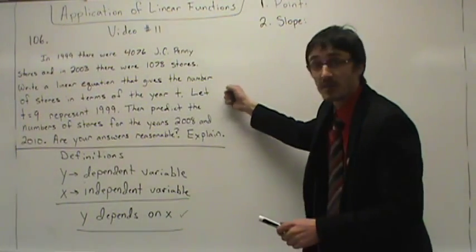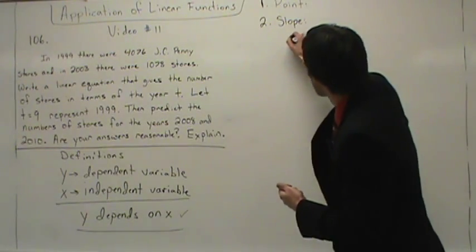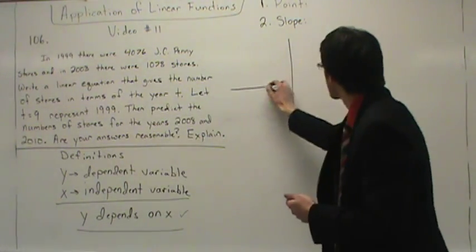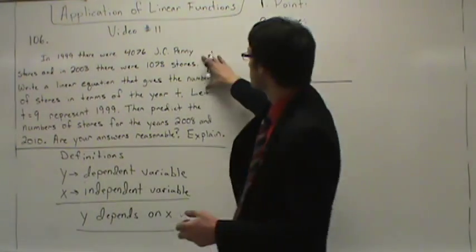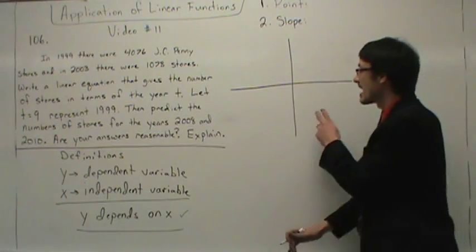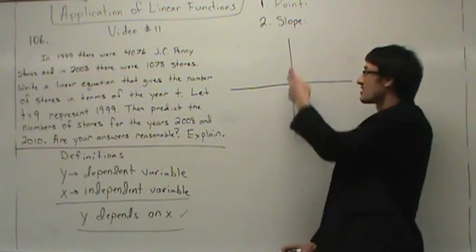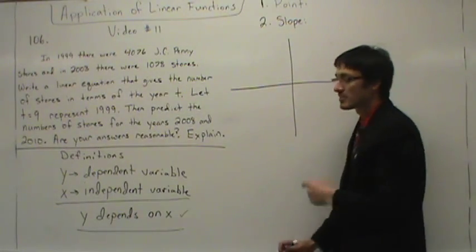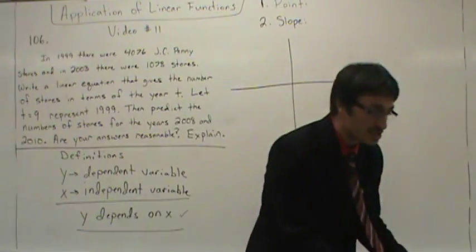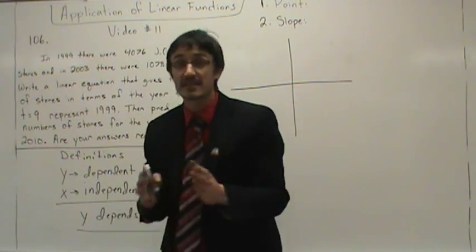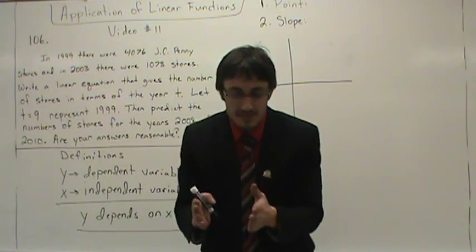To do this problem, number 106, what do you need? You need a graph. So let's draw a graph. To be able to find a point and a slope, you need a graph and you need this phrase: Y depends on X. Let's look at dependency. Weather conditions versus how the fish bite; road conditions versus how many accidents might occur in a day. Let's listen to the dependency — does the weather depend on how many fish bite, or does the number of fish that bite depend on what the weather conditions are?